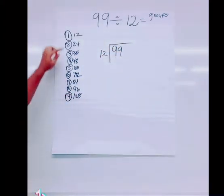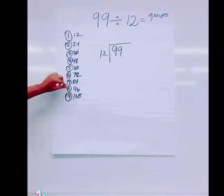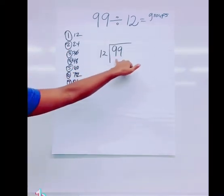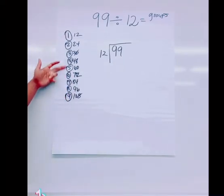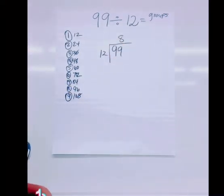I am now looking for the group number that comes as close to 99 as possible but does not go over because it's not exact. The number that does that is 8. Boom. 12 goes into 99 eight times.